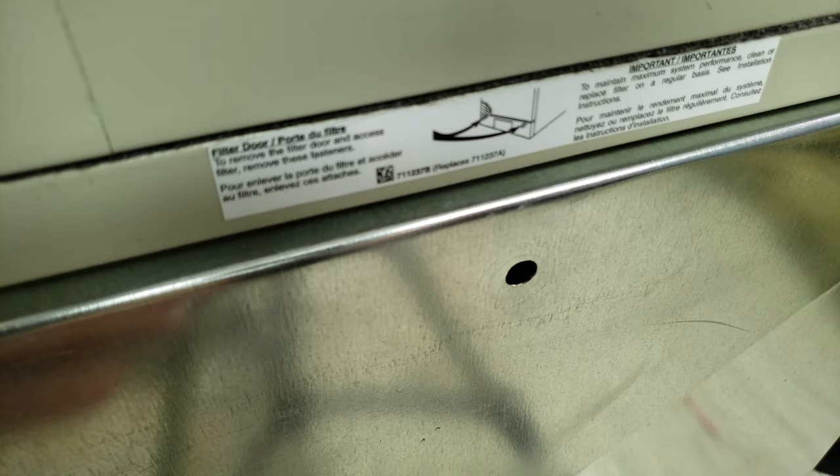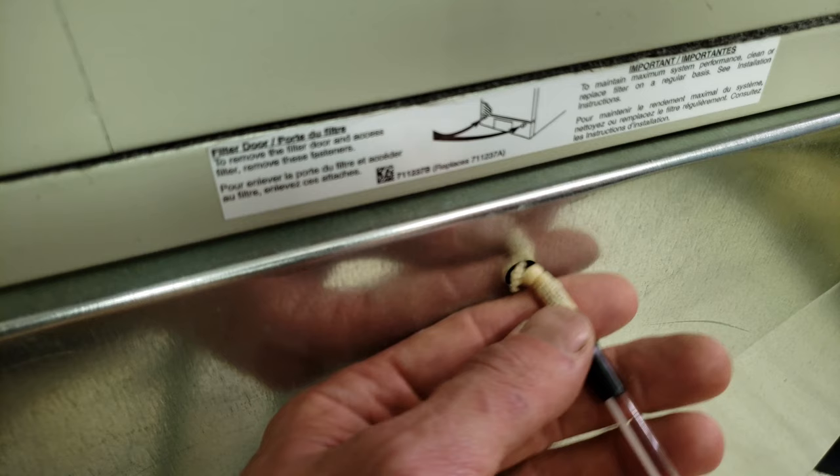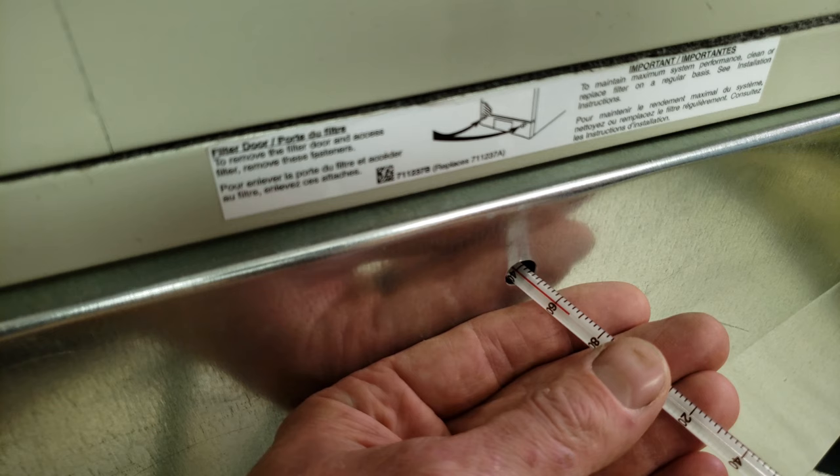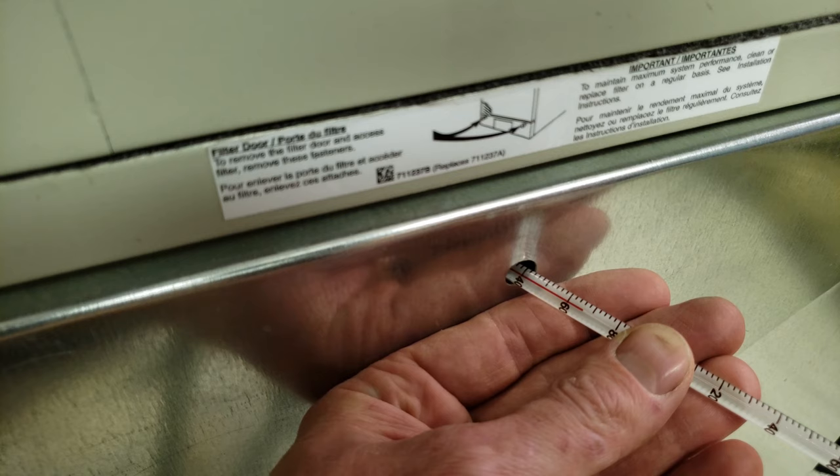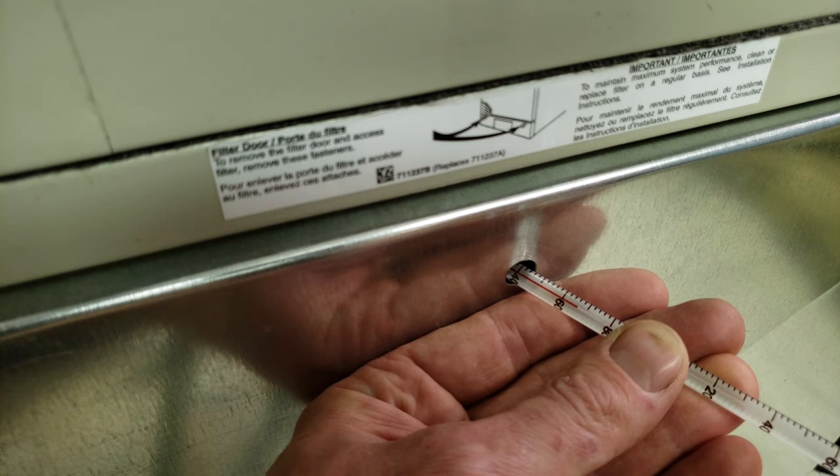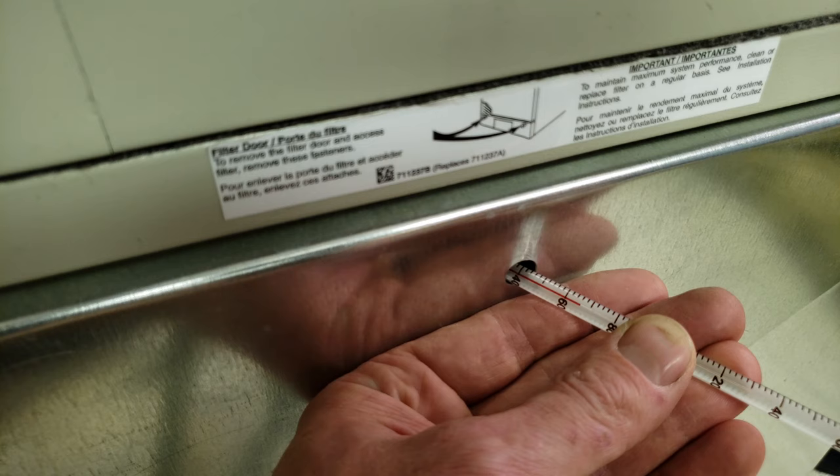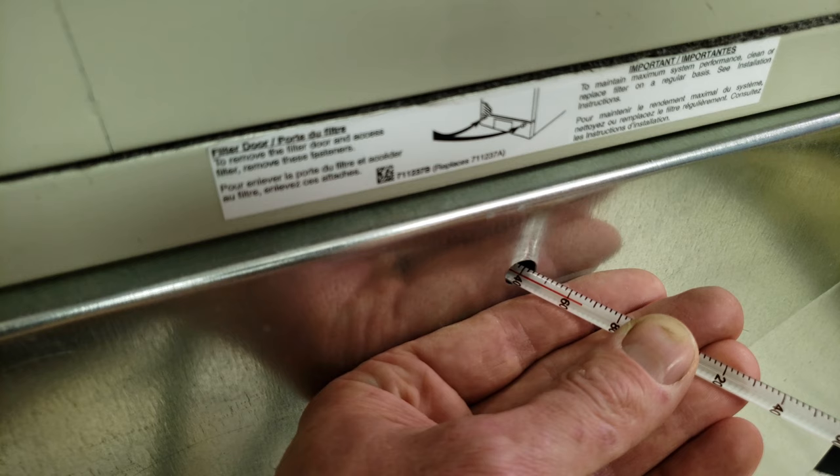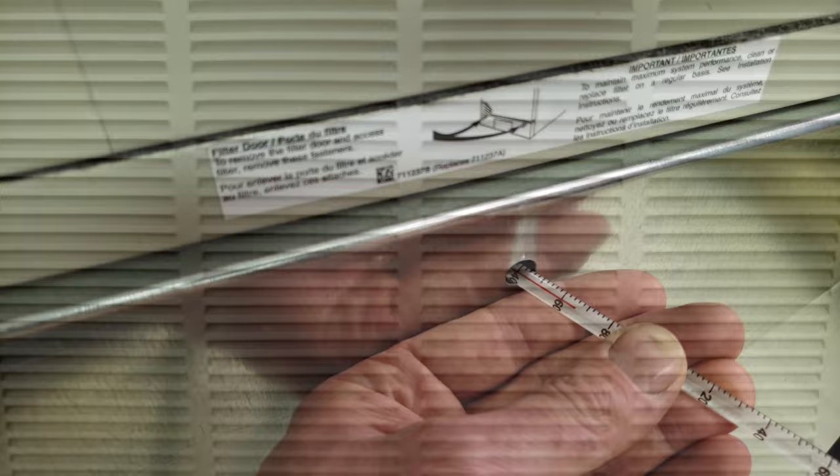Now we're at our air handler, and we have our evaporator coil here, our filter here, and here's the return. We have our thermometer with our wet sock, and we're just going to insert this and see what our wet bulb temperature is. We've got to give this a little bit of time, although I did just have this in this return here beforehand. We're reading right about 66 it looks like, but you would want to keep that in there for about two minutes.